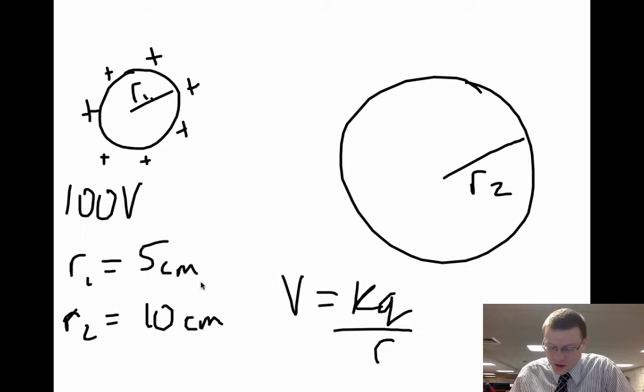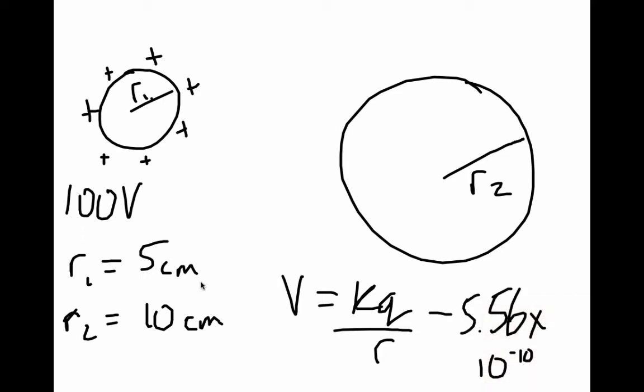So putting in your values, you should get a Q around about 5.56 times 10 to the minus tenth coulombs, or about 0.55 nano coulombs. So that's the total charge that we have available when we connect one of these spheres to the other. Now the other sphere isn't charged, it's neutral, so it has a zero volt potential.